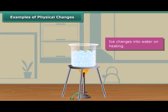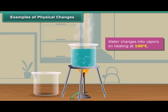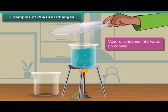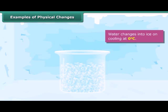On heating, ice changes into water. When this water is heated to 100 degrees Celsius, it changes to vapors. These vapors on cooling change to water, and when this water is cooled to 0 degrees Celsius, it converts to ice. So in the whole process, water changes only its state and the chemical composition of water remains the same.